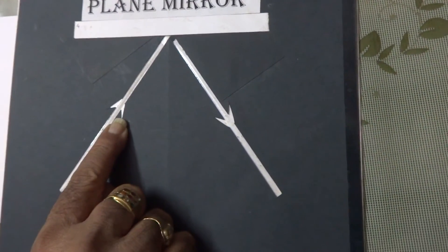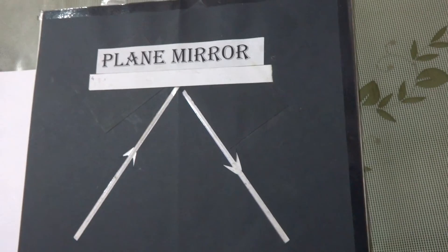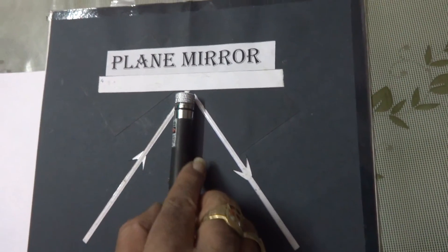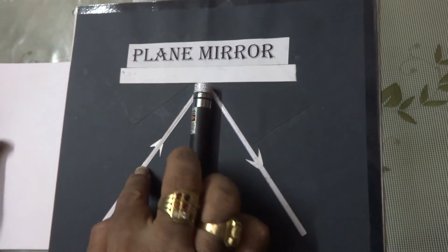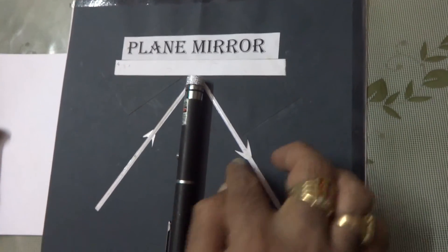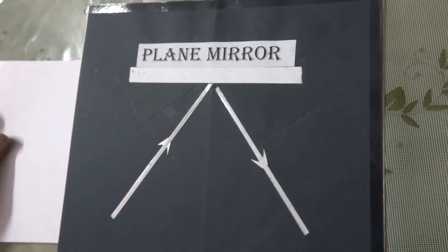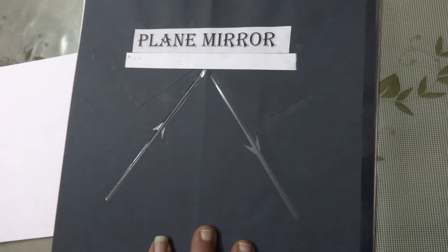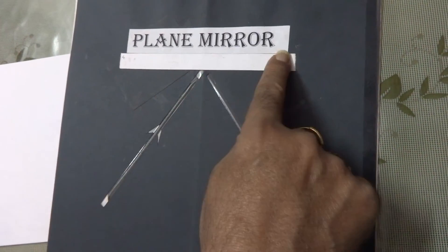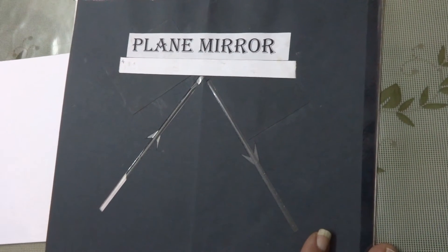This is the incident ray and if you keep this as normal, this angle is called angle of incidence and this is angle of reflection. I have taken a black sheet and on which a white sheet is attached.